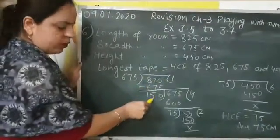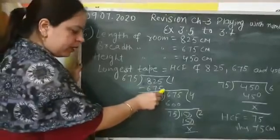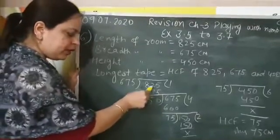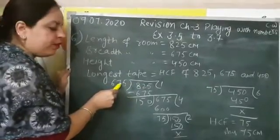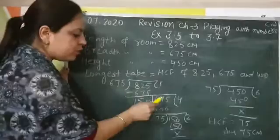When we subtract, the value comes as 150. Now student, 150 is the remainder for these cases. This divisor, 675, now it becomes your dividend.